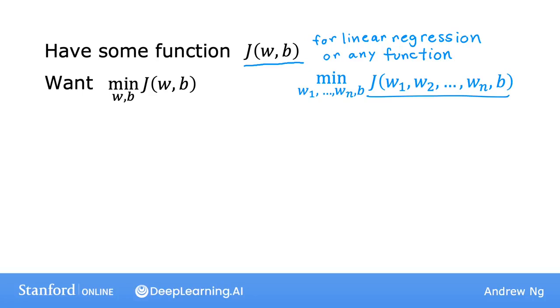It turns out that gradient descent is an algorithm that you can apply to try to minimize this cost function J as well. What you're going to do is start off with some initial guesses for w and b. In linear regression, it won't matter too much what the initial values are.